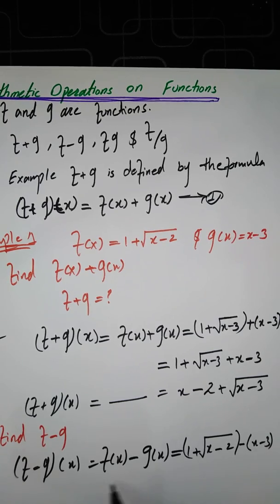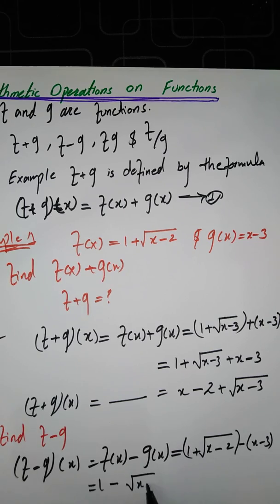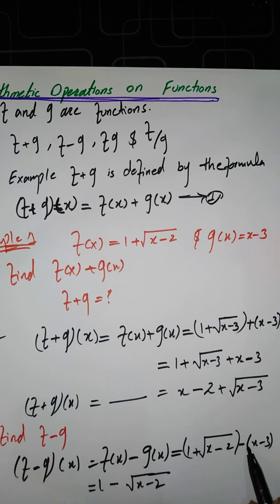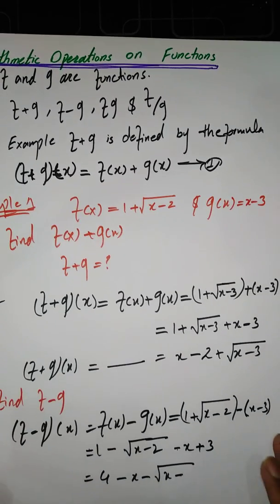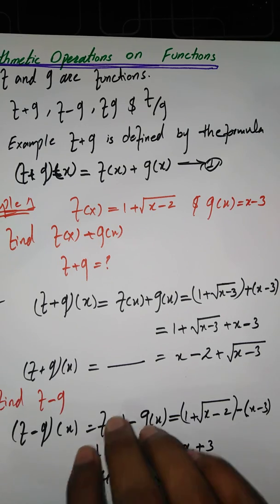After simplification, when you open the bracket with a minus sign, you change the signs of the terms inside the bracket. So it becomes 1 plus square root of (x minus 2) minus x plus 3, giving 4 minus x plus square root of (x minus 2).